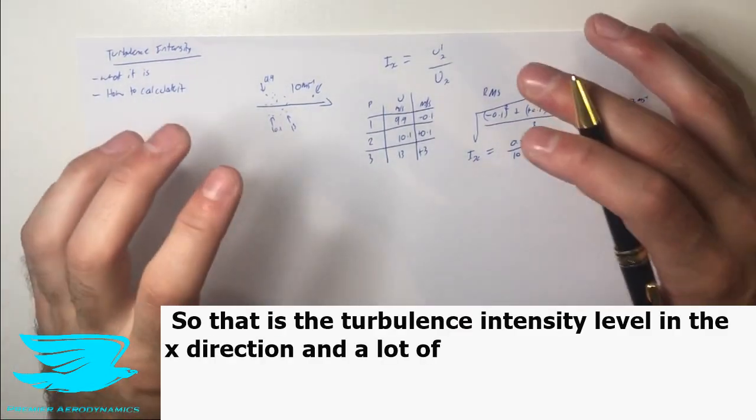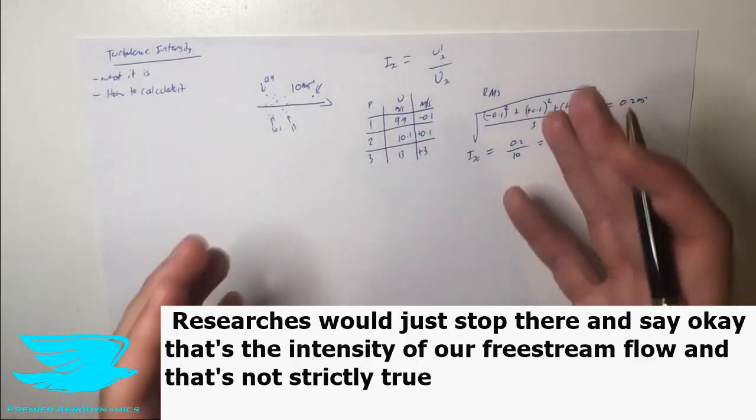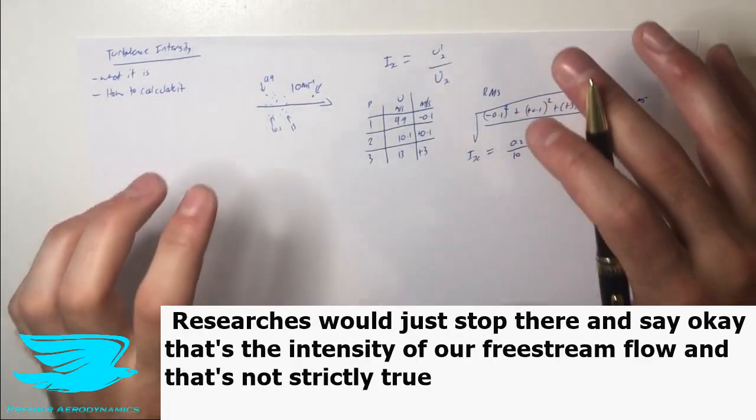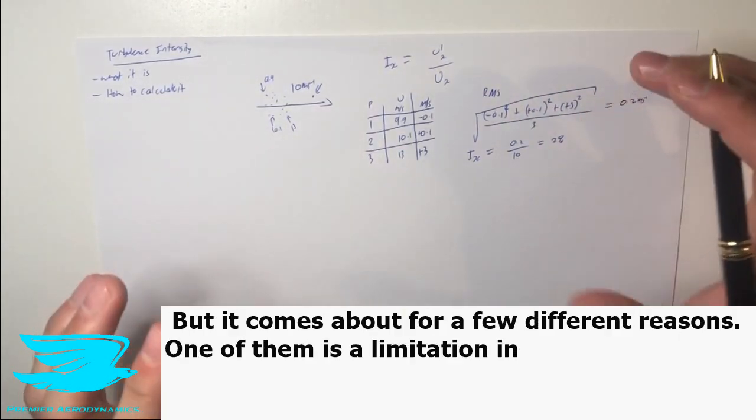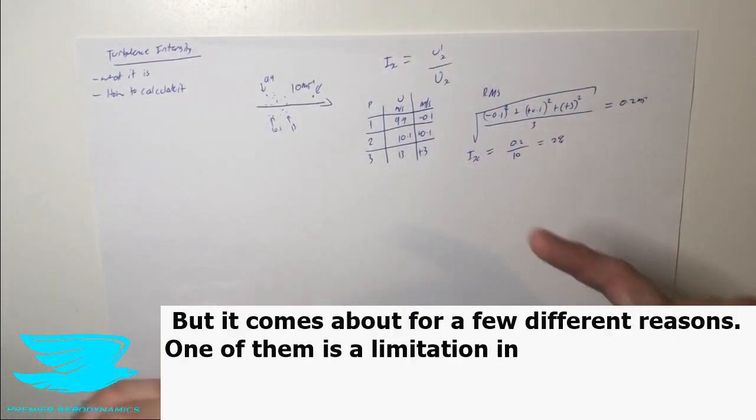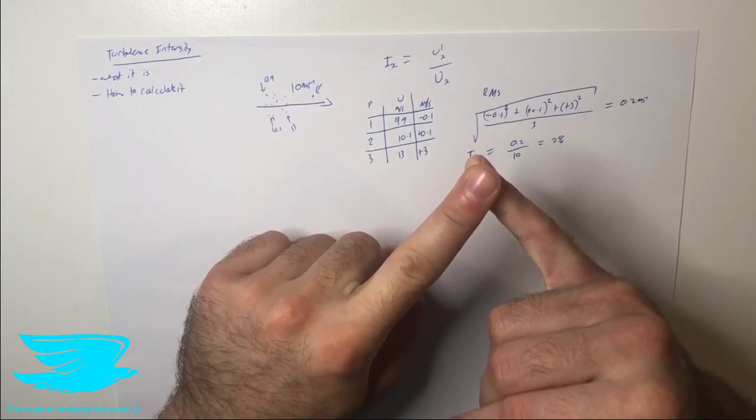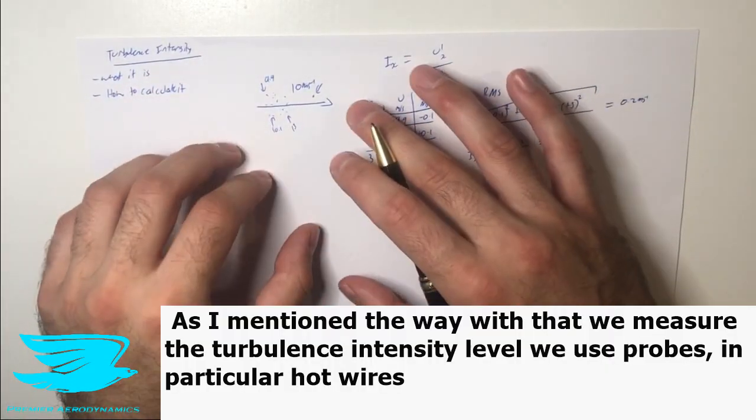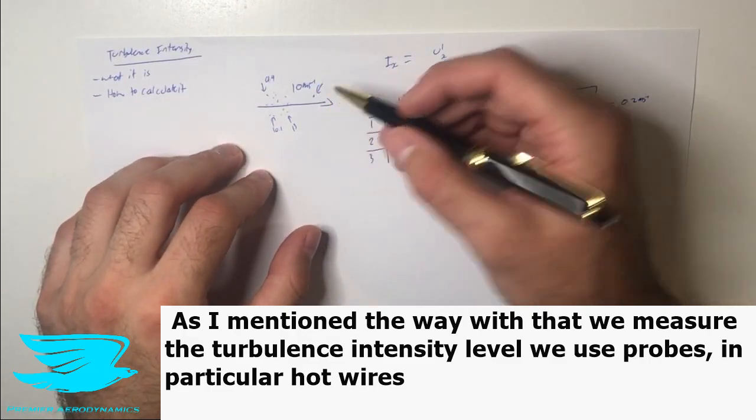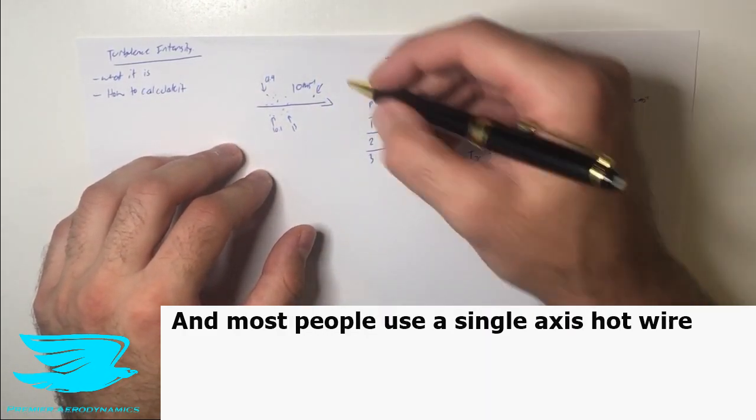So IX now is 0.2 divided by 10, which is the freestream velocity. And this comes out to be about 2%. So that is the turbulence intensity level in the X direction. And a lot of researchers will just stop there and say, okay, that's the turbulence intensity of our freestream flow. And that's not strictly true, but it comes about for a few different reasons. So one of them is a limitation in practical applications.